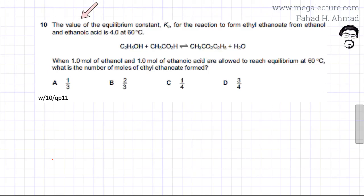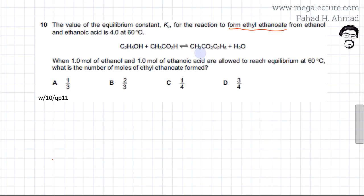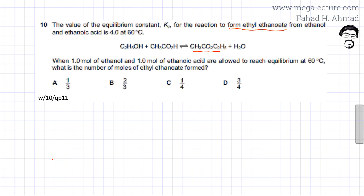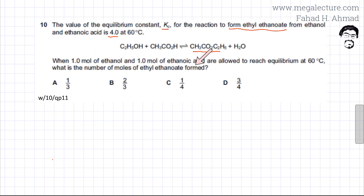The following past paper question states that the value of the equilibrium constant Kc for the reaction to form ethyl ethanoate — shown here — is given as 4. Ethyl ethanoate is being formed from ethanol and ethanoic acid. When one mole of ethanol and one mole of ethanoic acid are allowed to reach equilibrium at 60 degrees centigrade, what is the number of moles of ethyl ethanoate formed?